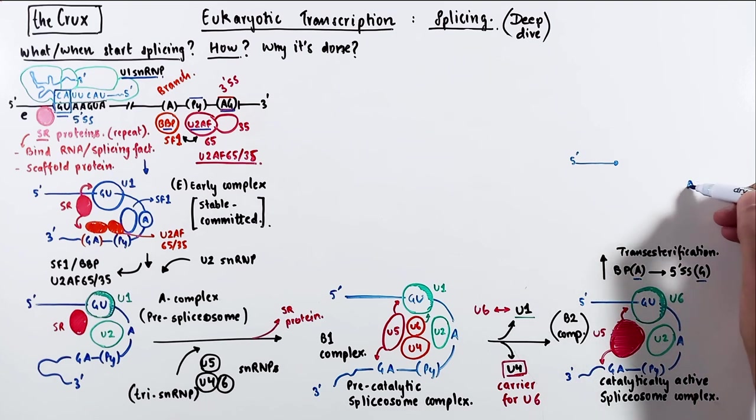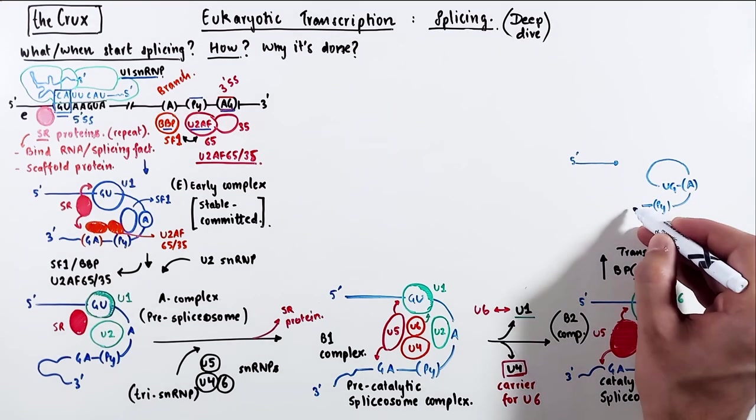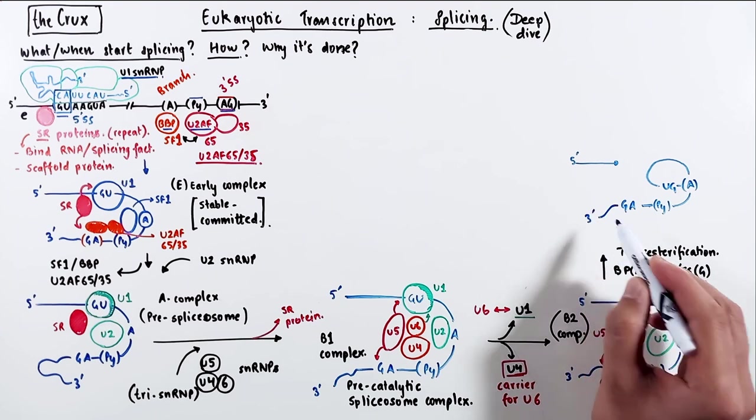which means that the exon is cut off from the intron at the 5' splice site, and the G from the 5' splice site is attached to the adenine at the branch point.